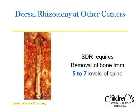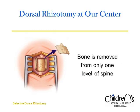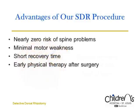In other centers, most often dorsal rhizotomy is performed after the bone is removed from a long five to seven levels of spine. Although children tend to do well even after this type of surgery, it is known that this type of procedure can result in spine problems even years after the surgery. At our center, bone is removed from only a single level of spine. We developed this technique in 1991, and since then, we have used this technique in all of our patients. We do not replace the bone. In children, the area will close with new bone. Our dorsal rhizotomy procedure is less invasive than other procedures and has several important advantages.